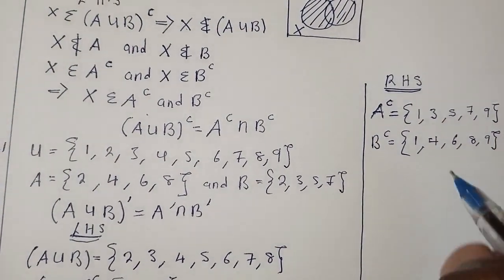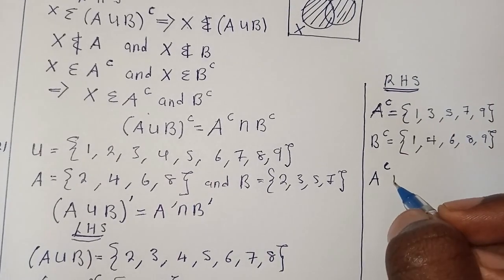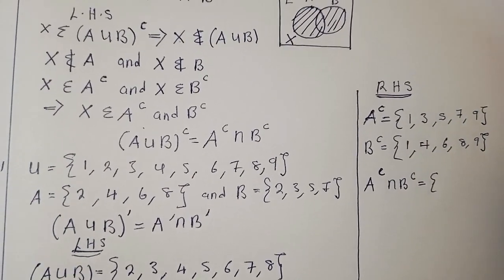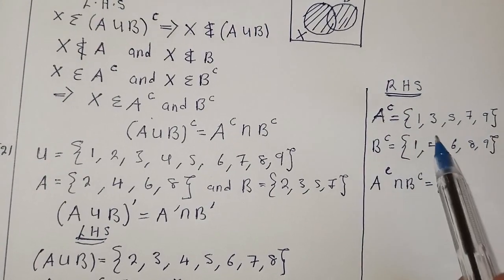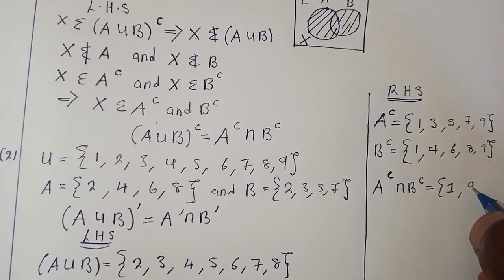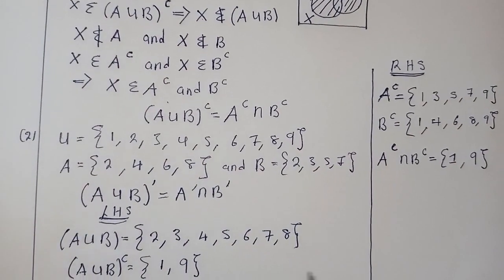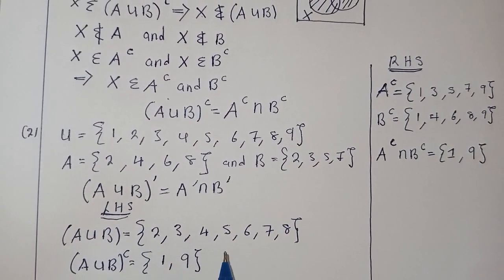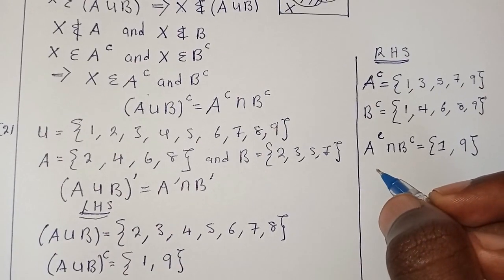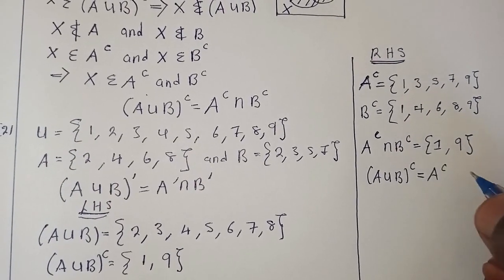Now we find A complement intersection B complement. The common elements between {1, 3, 5, 7, 9} and {1, 4, 6, 8, 9} are {1, 9}. On the left-hand side we also had {1, 9}. This shows that De Morgan's theorem is very much true, because whatever we had on the left-hand side we also have on the right-hand side.